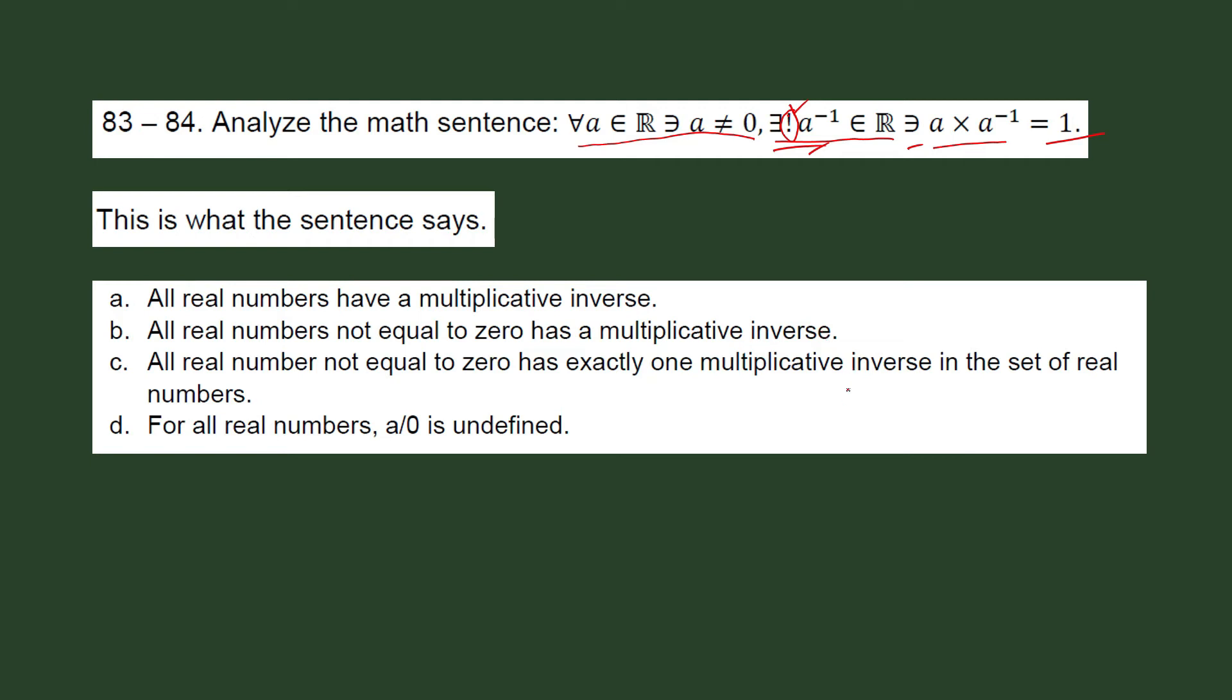So this one is letter C. So this sentence is describing to you the existence of a unique multiplicative inverse for any real number not equal to zero.